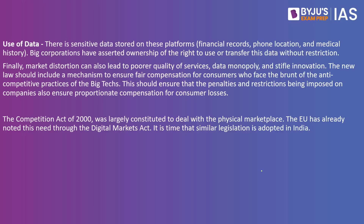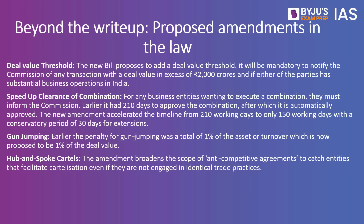The Competition Commission Act of India of 2002 is now being amended to tackle these issues, just as the EU introduced the Digital Markets Act. India, in this winter session of Parliament, is trying to bring changes to the law. First, the deal value threshold: if any deal between these companies exceeds ₹2,000 crore rupees and they have substantial business operations in India, it must first be informed to the CCI. Without CCI's permission, any deal over ₹2,000 crore cannot be finalized. The time limit for CCI to give permission has been reduced from 210 days to 150 days.